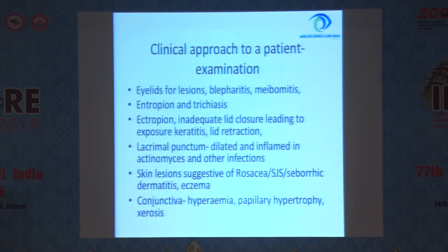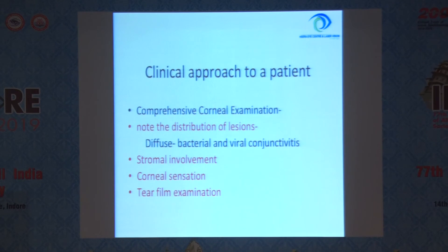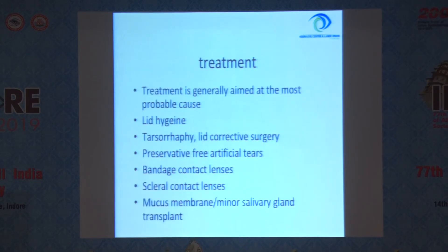For the conjunctiva, you should look for hyperemia, papillary hypertrophy and xerosis. Comprehensive clinical examination should look for distribution of lesions and stromal involvement. Corneal sensation becomes important in herpetic keratitis, and tear film examination is essential.